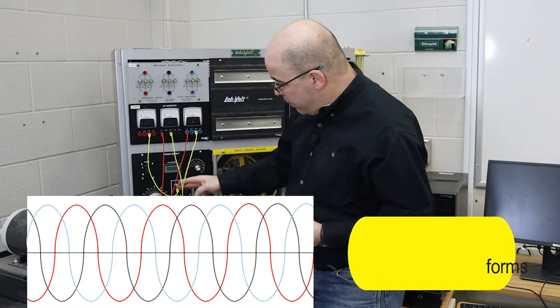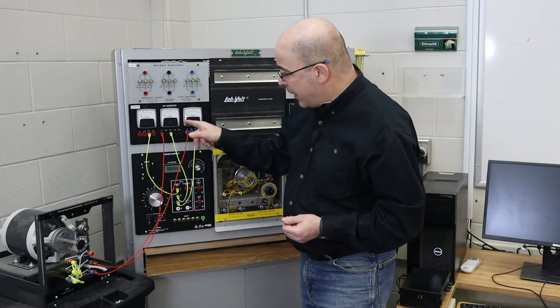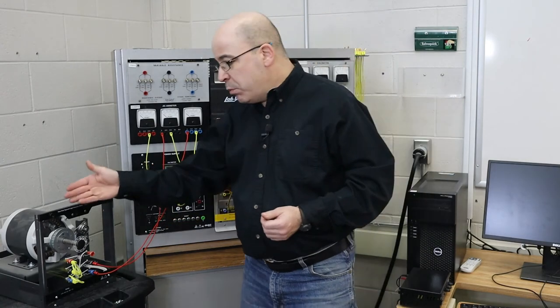Meaning based off of the direction of rotation I've got red black and blue. This will help set up which way the rotating magnetic field turns whether it's clockwise or counterclockwise.